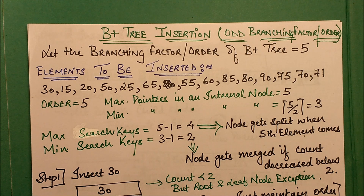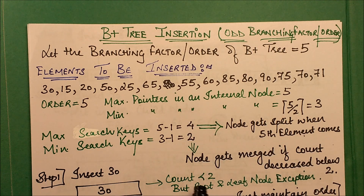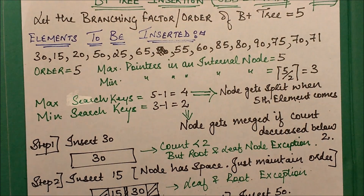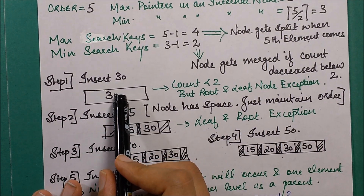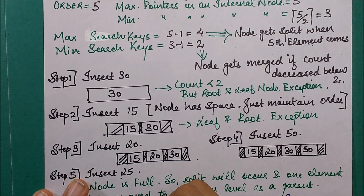Now let's discuss the insertion process. We start with the first element, 30. The maximum search keys in any node are 4, and whenever the fifth element comes, a split will occur. So we insert 30 as the first element.